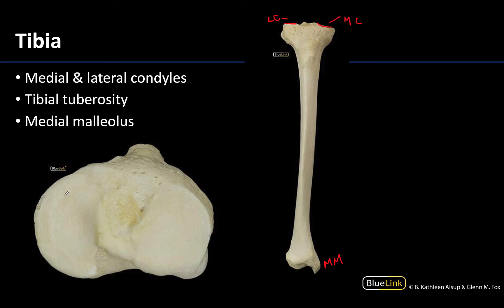I would not ask you to identify the two condyles in this specific image, but I put it here so you can see how shallow these condyles are. Those fairly large femoral condyles are fitting into these very shallow medial and lateral tibial condyles — that's why you don't have a really great fit at the knee, making it relatively unstable.